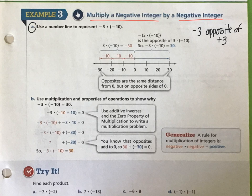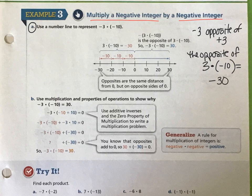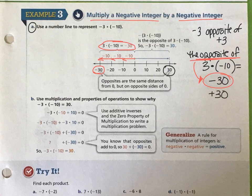So negative 3 is the opposite of positive 3. So when we do negative 3 times negative 10, we can look at it as the opposite of 3 times negative 10. Well, what is 3 times negative 10? In this case, we know that that answer, based on our previous examples, is negative 30. And the number line shows us that right here. Negative 10, negative 10, negative 10. So what is the opposite of a negative 30? That would have to be a positive 30. So we're going to basically flip it around and go the other direction. Remember opposites are the same distance from 0, but on opposite sides of 0.